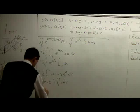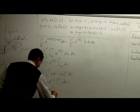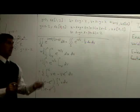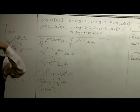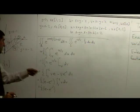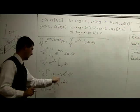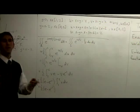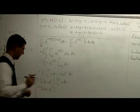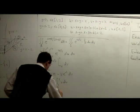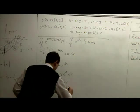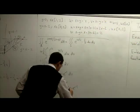Since v(e - e⁻¹) factors out the v, the remaining integral is (1/2)(e - e⁻¹) ∫₁² v dv. Evaluating: (1/2)(e - e⁻¹) · [v²/2]₁² = (1/2)(e - e⁻¹) · (4/2 - 1/2) = (1/2)(e - e⁻¹) · (3/2) = (3/4)(e - e⁻¹). The hard part went away nicely.